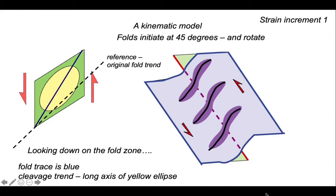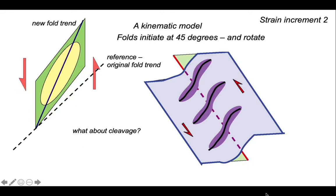Now we've imposed some shearing, and we can see as a consequence the orientation of the fold hinge has rotated. So we've got a new fold trend. What about the cleavage? Well, the cleavage trace will be defined by the long axis of the yellow ellipse. At first sight it might look like it's parallel to the blue line, the hinge line, but actually it's not. It's oblique to the trend of the folds.